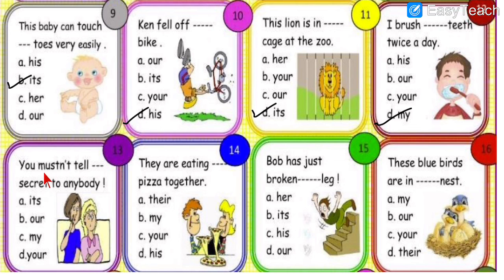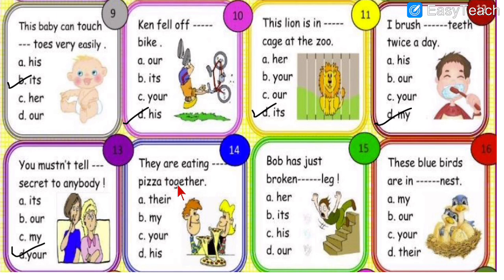Number thirteen: you must not tell dash secret to anybody. The secret is between these two girls. Options are its, our, my, or your. We write 'your secret' — because it is advice that you should never share your secrets with anyone. Never share your secrets with anyone.